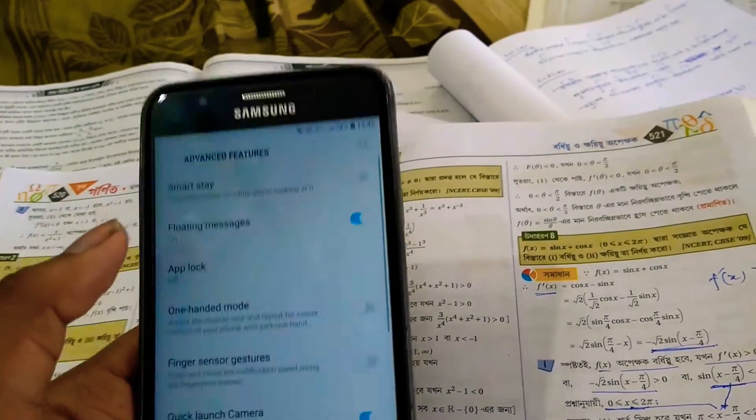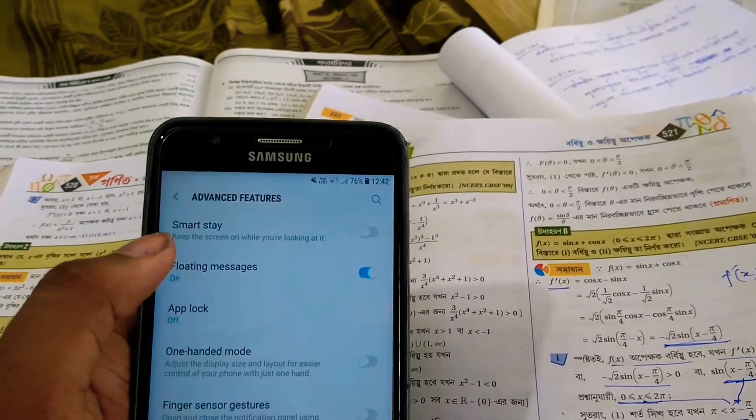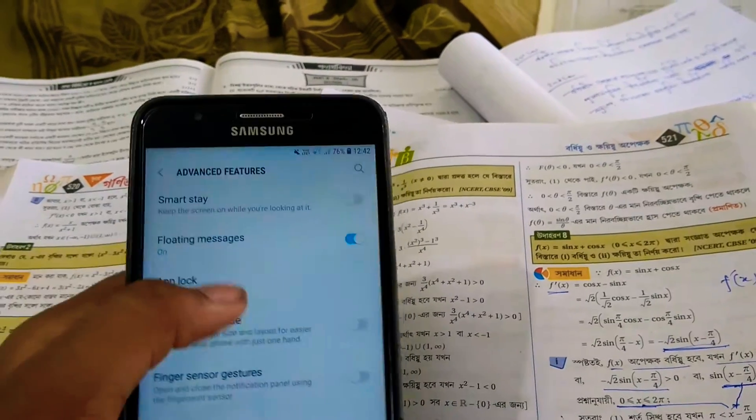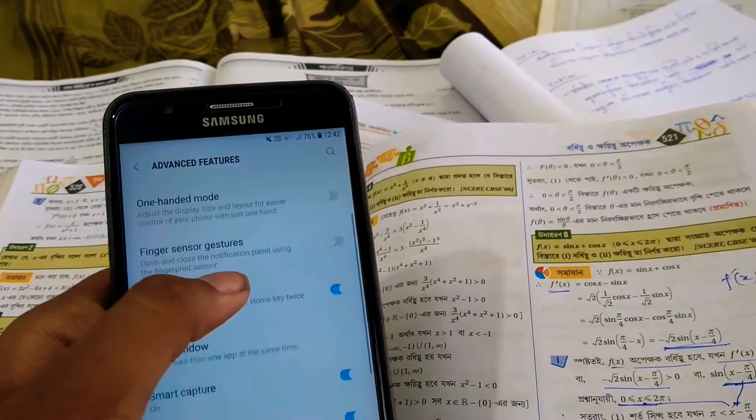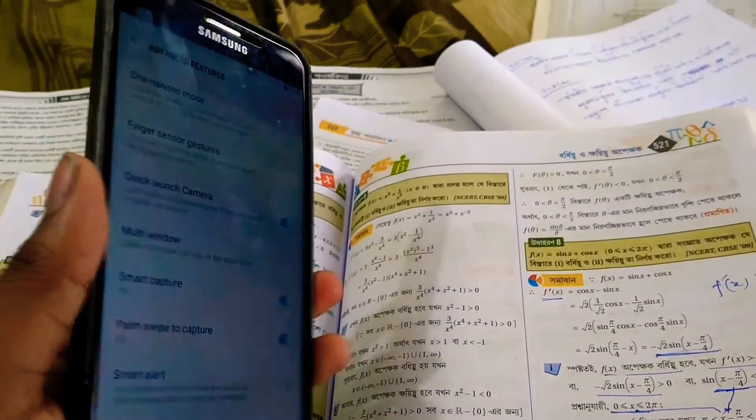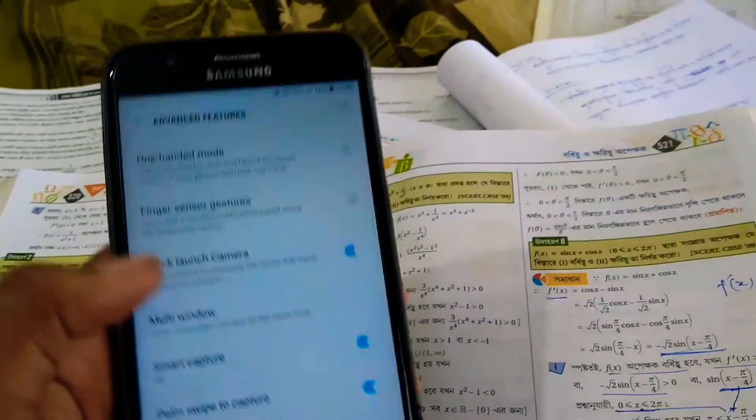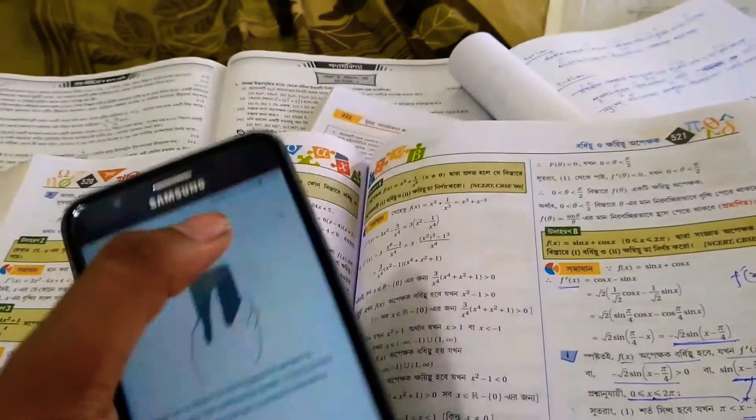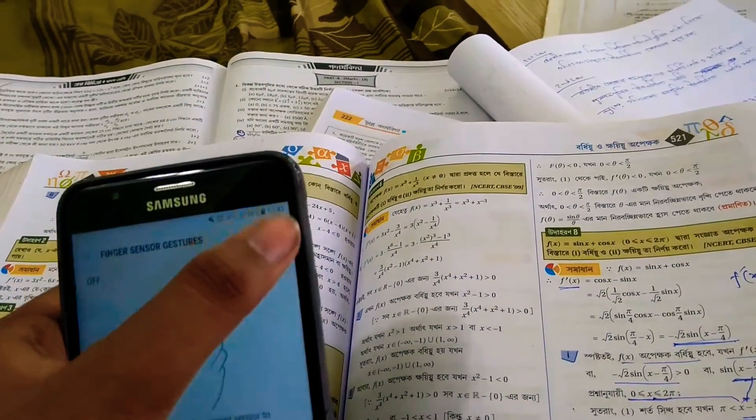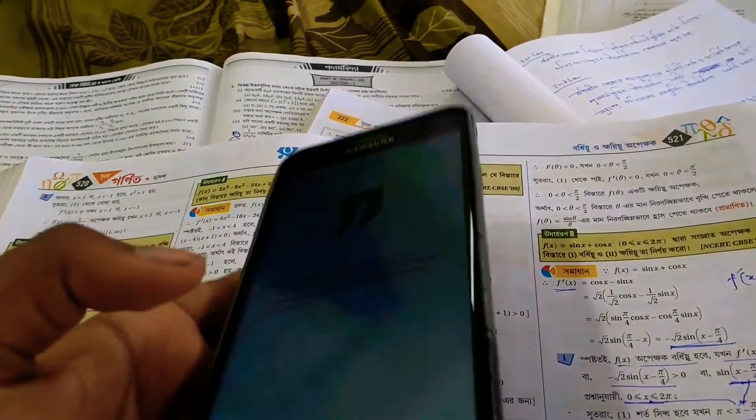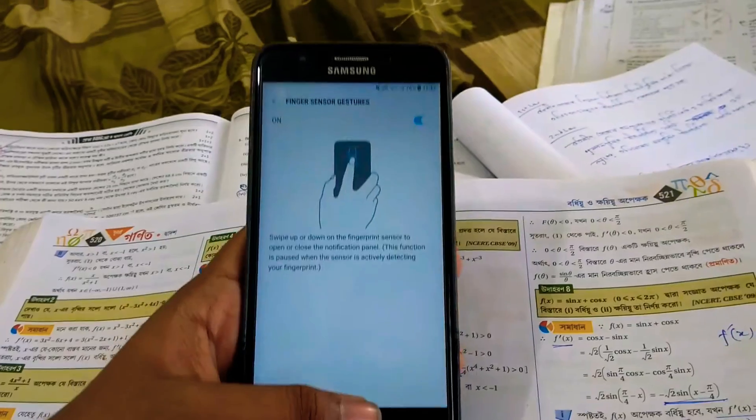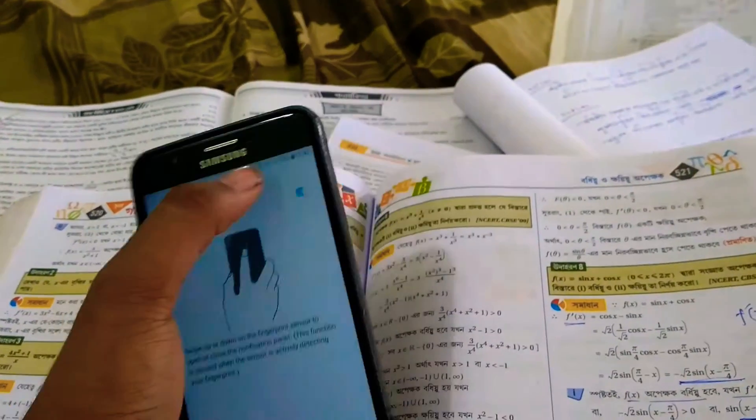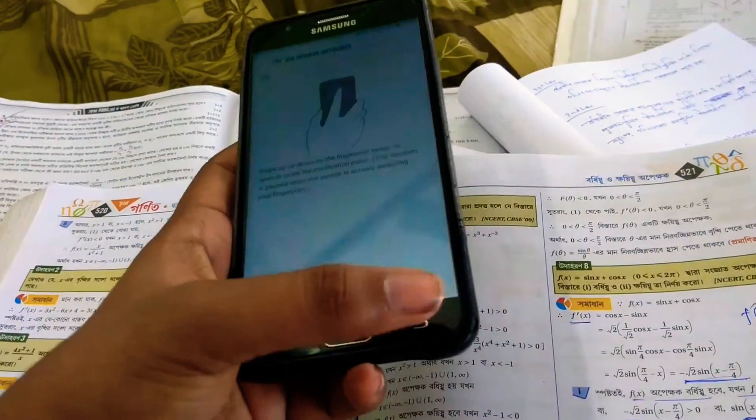If you go to advanced features, the Smart Stay doesn't work I think, and there's also floating message. There's app lock, one-handed mode, and finger sensor gesture—because the S9 has a fingerprint sensor at the back so it helps like this. This phone has a front-mounted fingerprint scanner but still it works. If you swipe like this it works. I've kept this turned off.